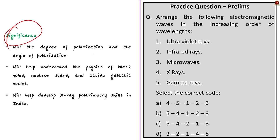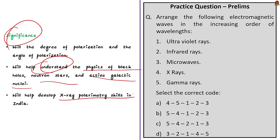X-ray polarization measurements — like the degree of polarization and the angle of polarization — mainly from celestial objects like black holes, neutron stars, and active galactic nuclei will help us understand their physics better. Also, the mission will help in developing X-ray polarimetry skills in India and lay the groundwork for future progress. These are all some very important points to remember about X-ray polarimetry and the XPoSat satellite.